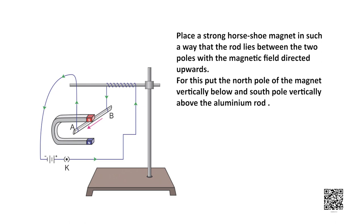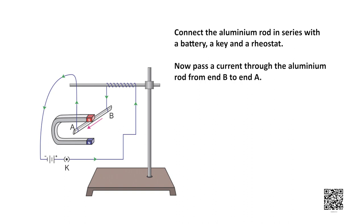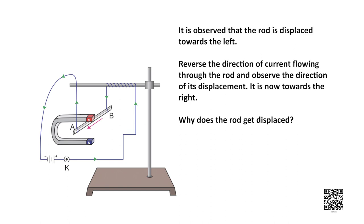Connect the aluminium rod in series with a battery, a key, and a rheostat, then pass current through the rod from end B to end A. It is observed that the rod is displaced towards the left. Reversing the direction of current causes the rod to move towards the right. This suggests that a force is exerted on the current carrying rod in an external magnetic field, and the direction of force is reversed when the direction of current is reversed.